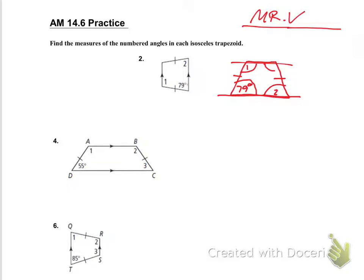I have 79 degrees in the lower left, and since this is an isosceles triangle, that's going to be equal to angle two. So angle two is going to be equal to 79 degrees.